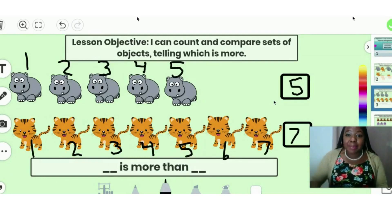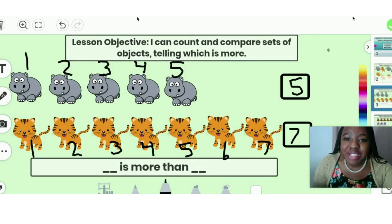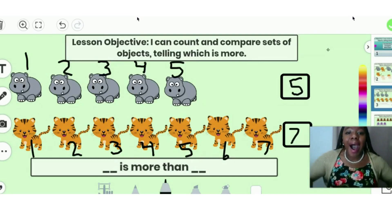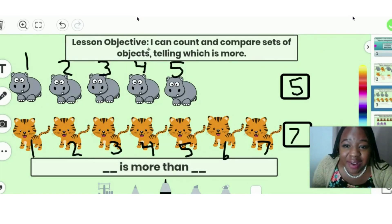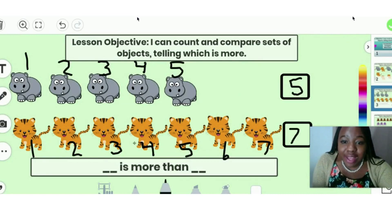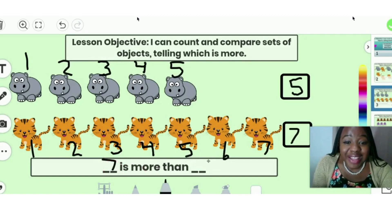So now we're going to compare to tell which has more. Let's see. Which number is more? I know that seven is more than five. We can see that there's five here and there's seven here. We can see that there's two more. So let's write that down. We're going to write seven is more than five.